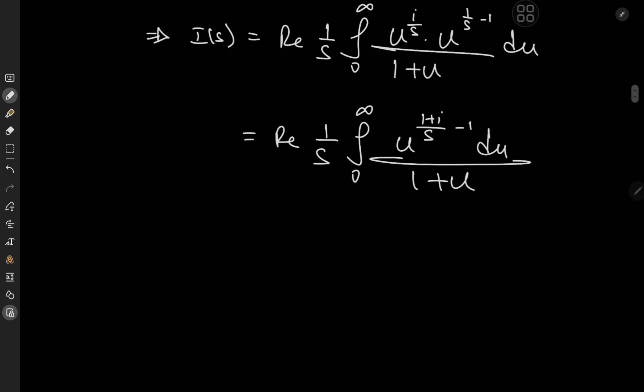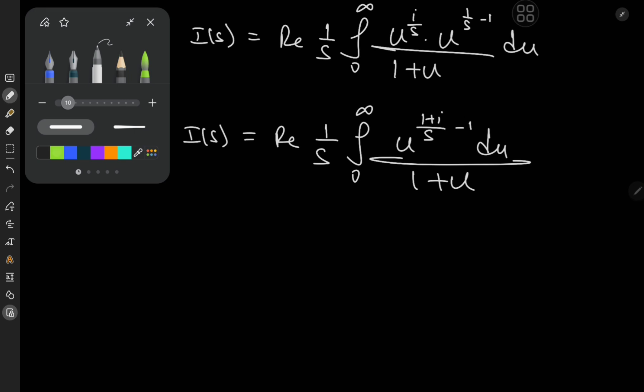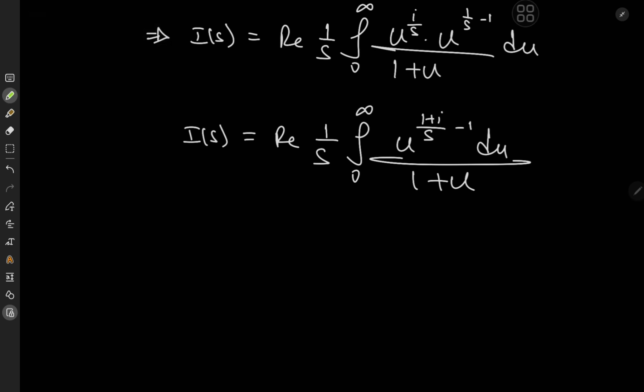And this integral is really nice. I really like this integral because it reminds me of one of my favorite tricks, and that trick is the reflection formula for the gamma function. So the integral from 0 to infinity of u to the z minus 1 du divided by 1 plus u equals pi divided by the sine of pi times z.